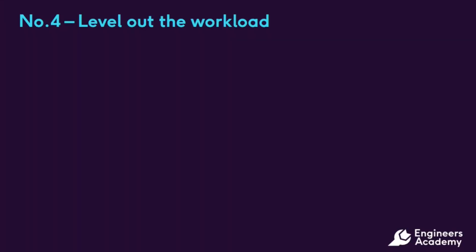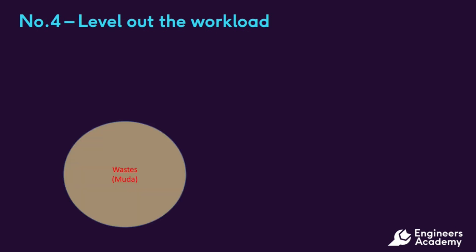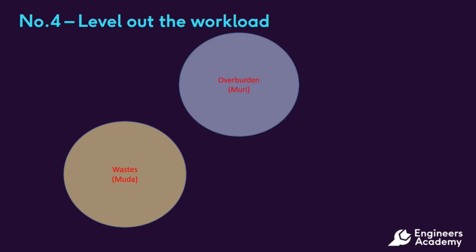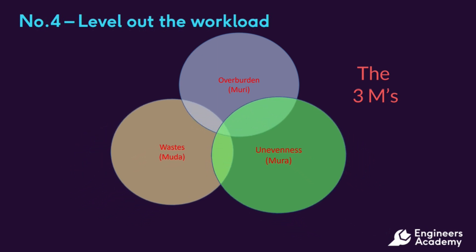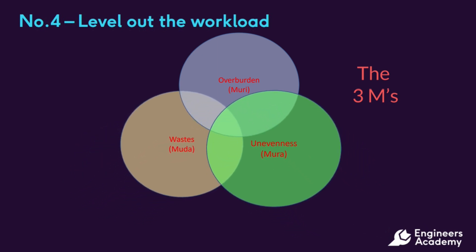Principle 4 is to level out the workload. In learning outcome 1 we learnt about the seven wastes, or muda. There are two other types of wastes in the Toyota production system: muri, which is overburdening people or equipment, and mura, which is unevenness. Together, muda, muri, and mura are known as the three M's, and there is an interdependency between all three.